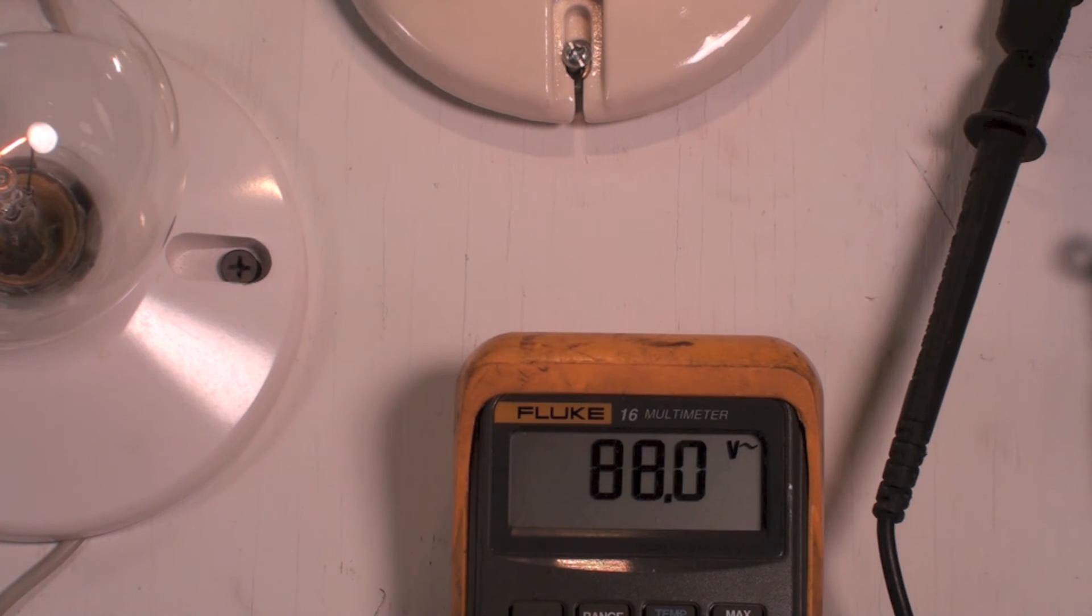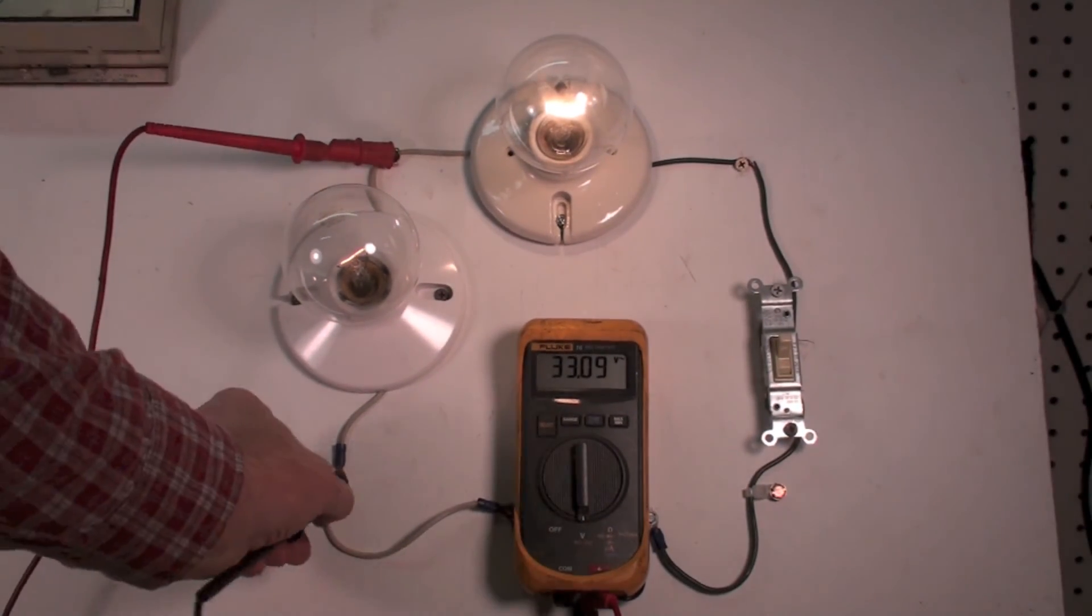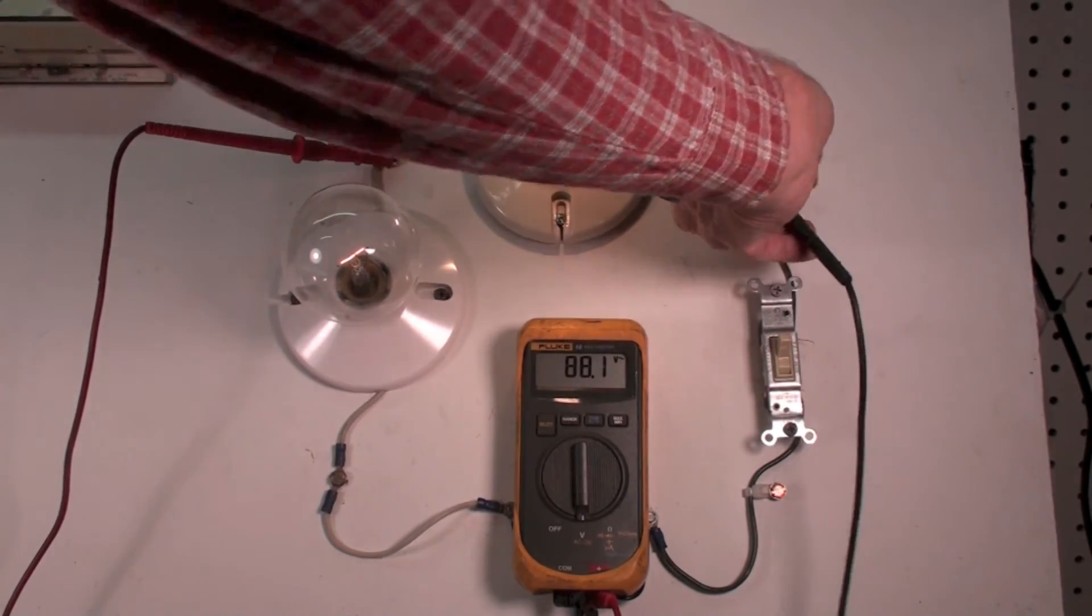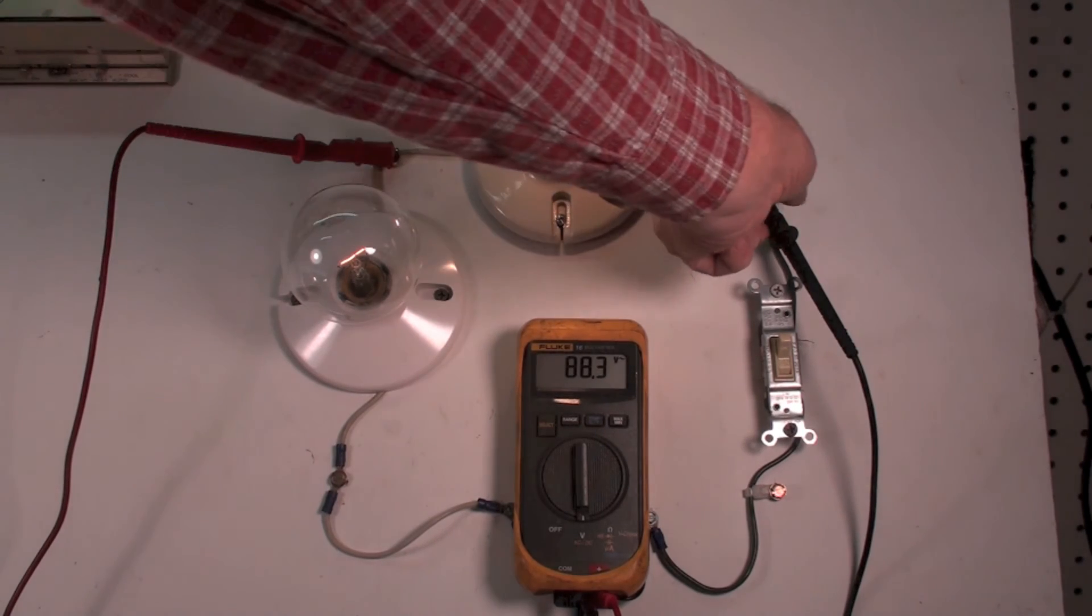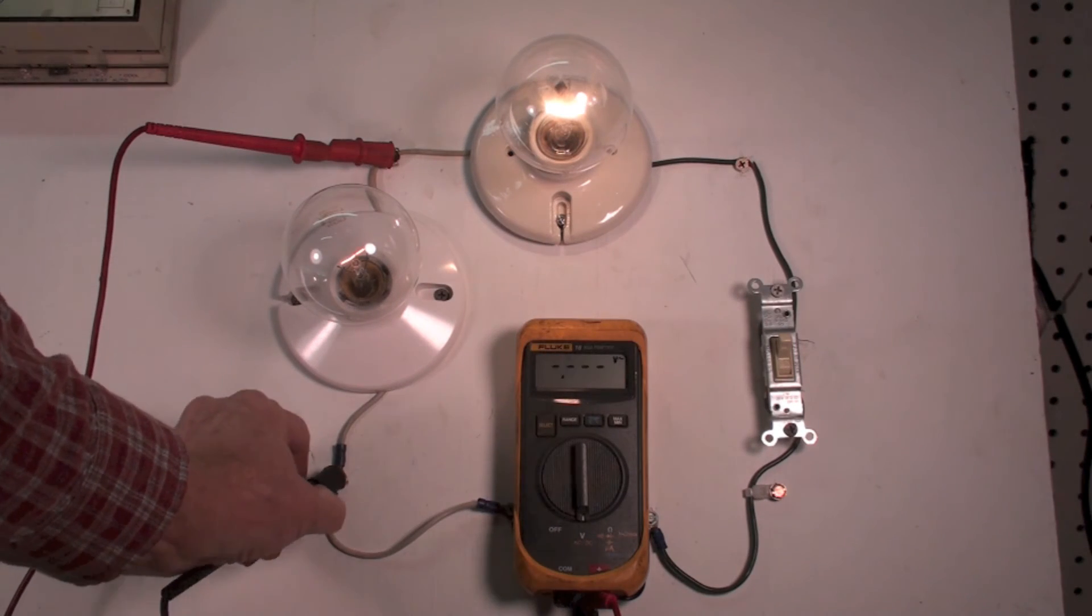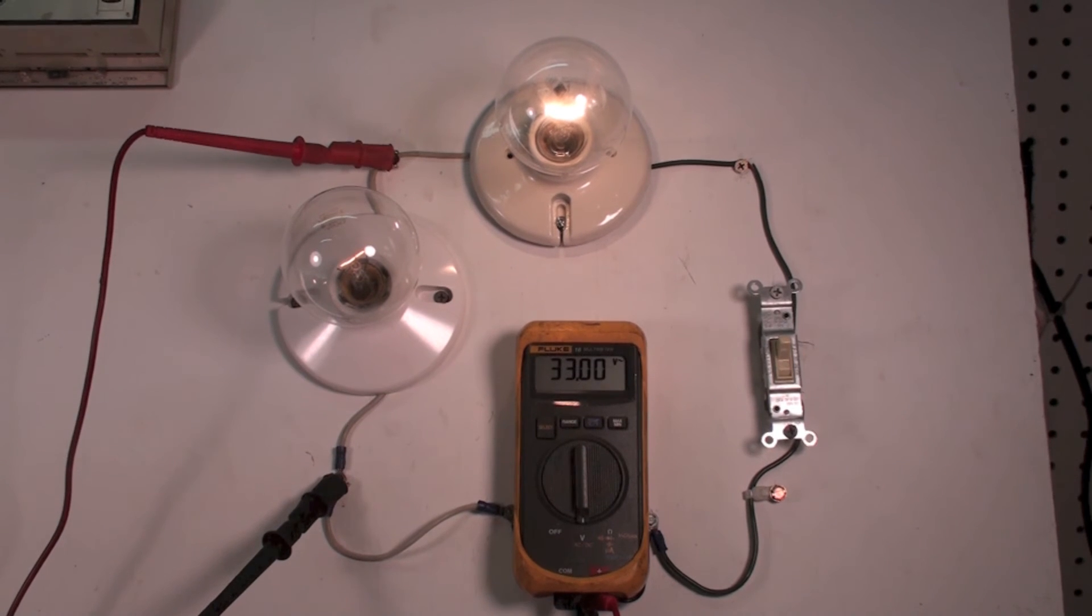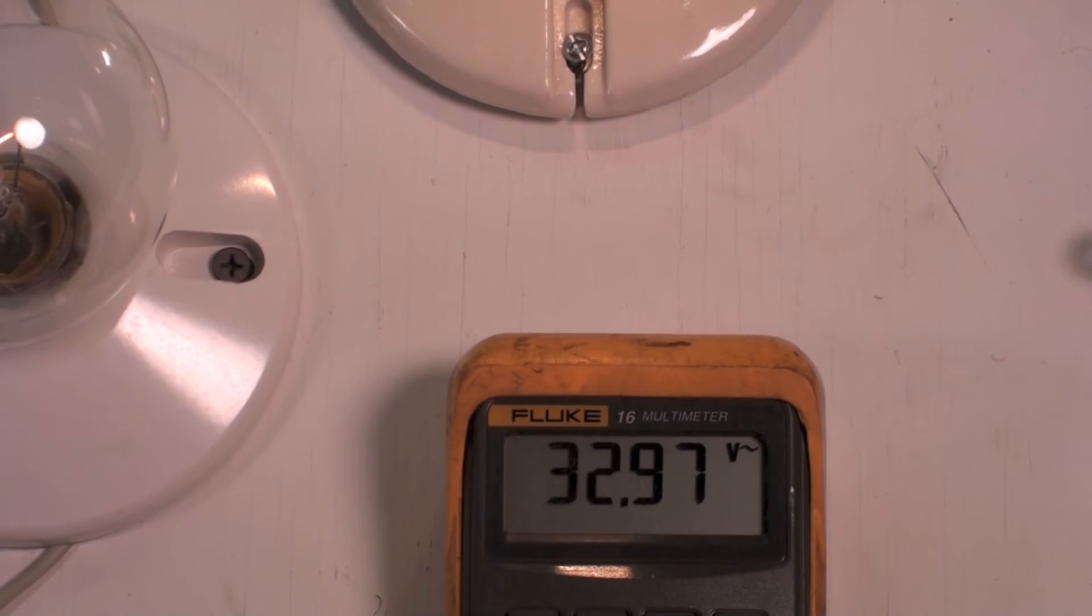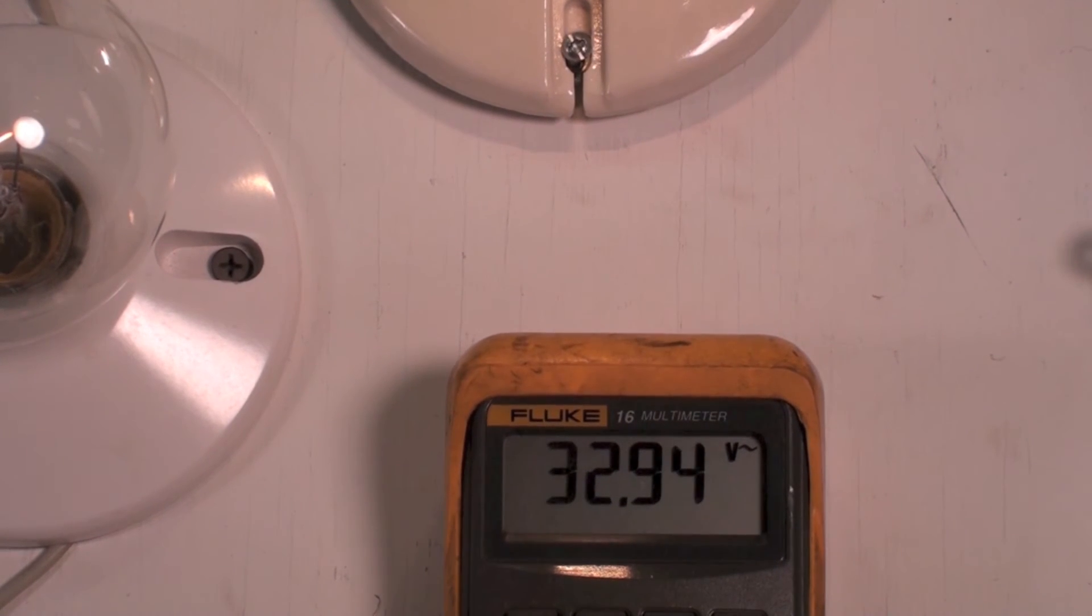Now I'm going to take and take this off here and I'm going to put it down here, so I'm just reading the voltage drop of one light. Now what do we got? 32, 33 volts. Okay, if I take my 33 and my 88 and I add them together, guess what I get? 121.